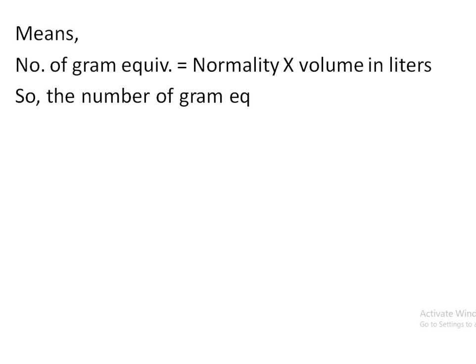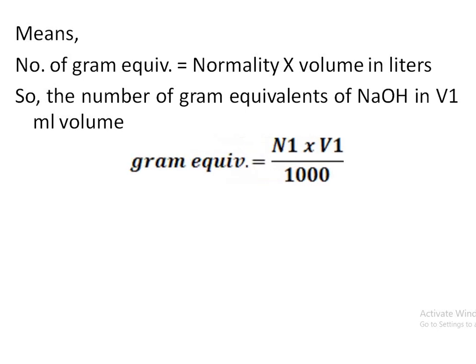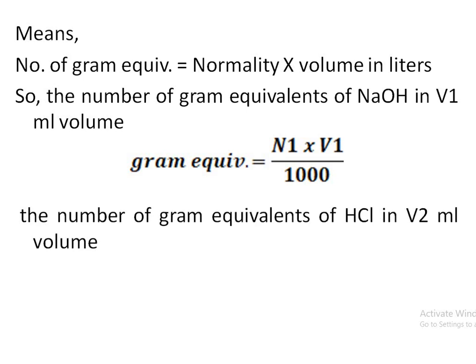So the number of gram equivalents of sodium hydroxide in V1 ml of volume would be equal to N1 times V1 divided by 1000. Here, 1000 is used to convert the volume to liters. And the number of gram equivalents of HCl in V2 ml of volume will be equal to N2 times V2 divided by 1000.